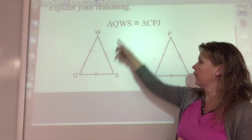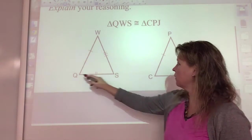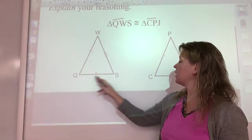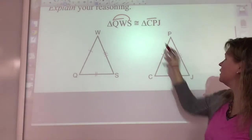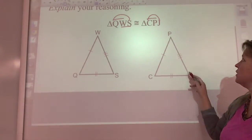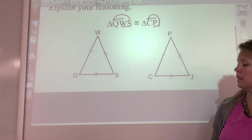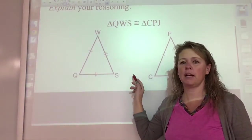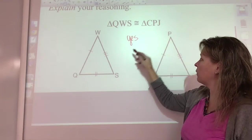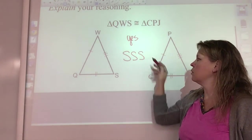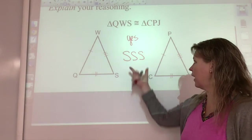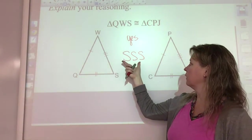But did they write this in the correct order? Is segment QW congruent to segment CP? Yes, those are in the right order. Is segment QS congruent to segment CJ? Yes, those are first and third, written in the same order. And is WS congruent to PJ? They have it marked side-side-side, and they also put the congruent statement in the correct order. So, yes. Explain our reasoning — you abbreviate it as SSS. Go with SSS.